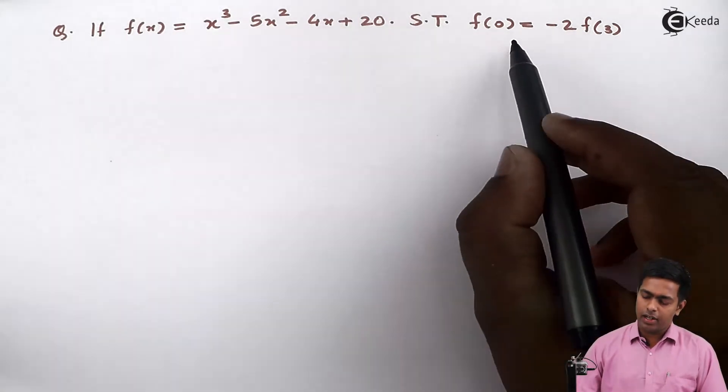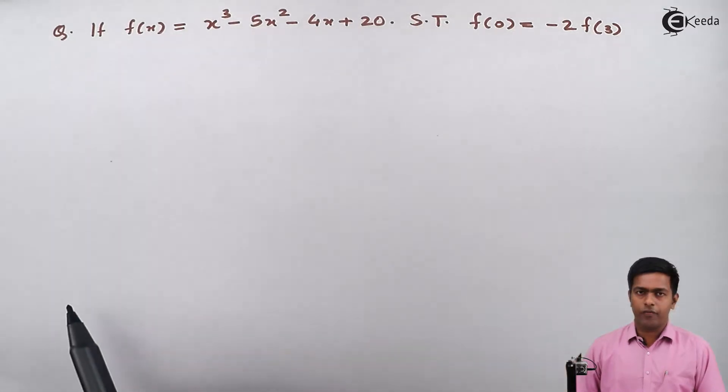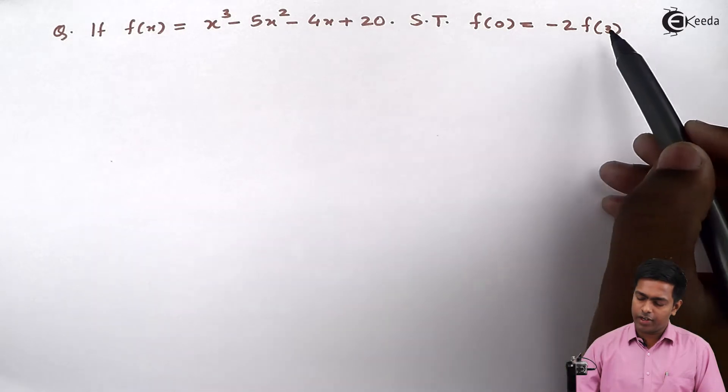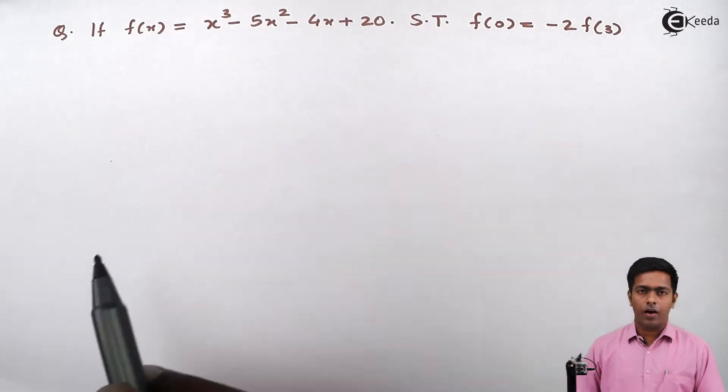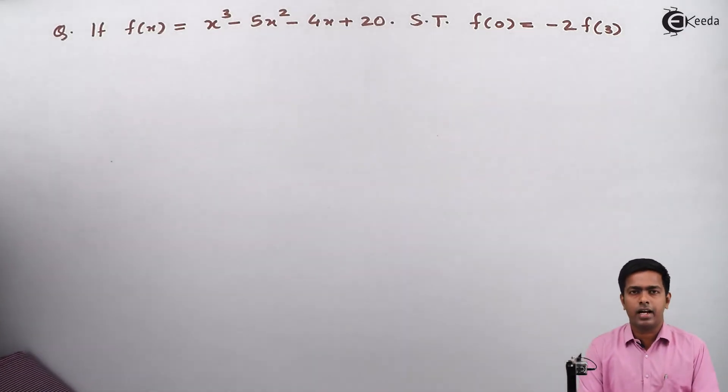So to show that f(0) = -2f(3), we will first find out f(0) and then we will find out f(3). After that we'll substitute the values in LHS and RHS and we'll prove that left hand side is equal to right hand side.